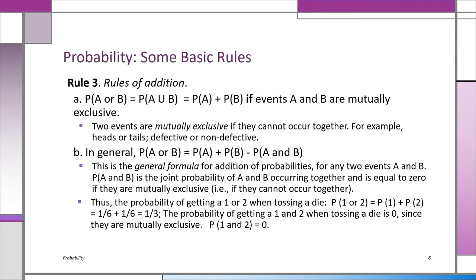Now we learn the rule of addition. Events A and B are mutually exclusive simply means that if you have A, you can't have B, and if you have B, you can't have A. Then the rule is simple: the probability of A or B is the probability of A plus the probability of B.